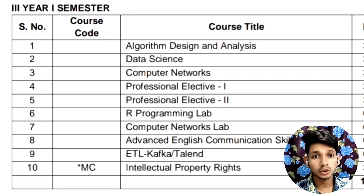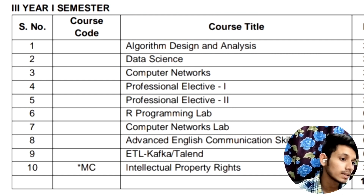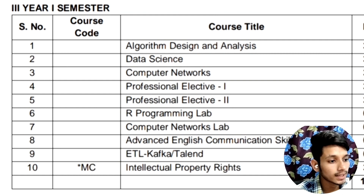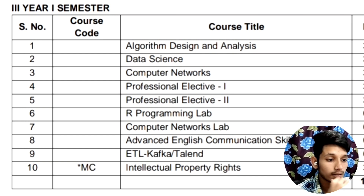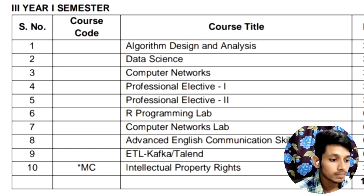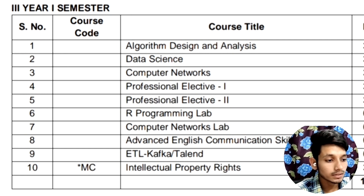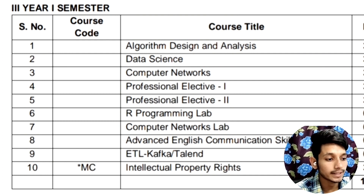In the first semester of third year, you will be having the subjects Algorithm Design and Analysis, Data Science, Computer Networks, Professional Elective 1, and Professional Elective 2. Labs include R Programming, Computer Networks, and Advanced English Communication Skills. You will also have an extra subject, Intellectual Property Rights, without any credits.